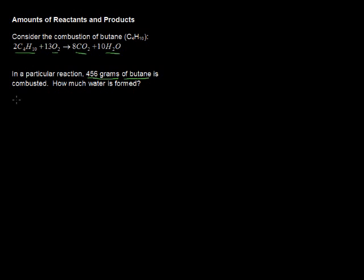So let's first do that: 456 grams of butane, C4H10. And the way we convert this, we will multiply by the correct conversion. I know that one mole of butane equals 58.12 grams. Now that is the molecular mass of butane, C4H10. Let me just talk about how I got that.